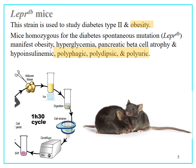We harvested the adipose tissue from those animals, placed it on ice, and digested it with collagenase. Through a cell strainer, we centrifuged the adipose tissue and harvested the SVF from those animals.